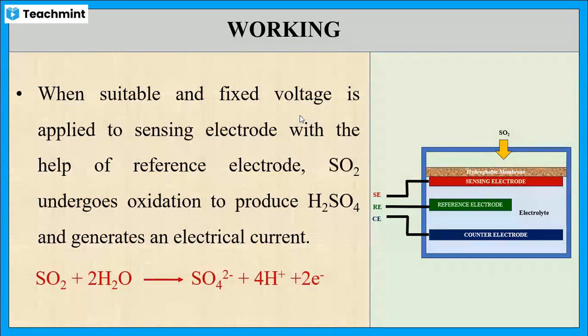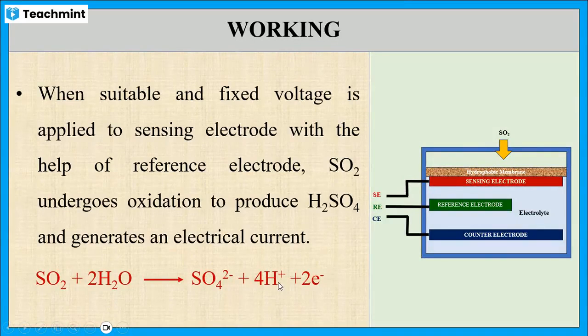So sulfur dioxide gets oxidized at the working electrode to produce sulfate ions and protons and generates an electrical current. This is the oxidation reaction where the electrons are liberated.